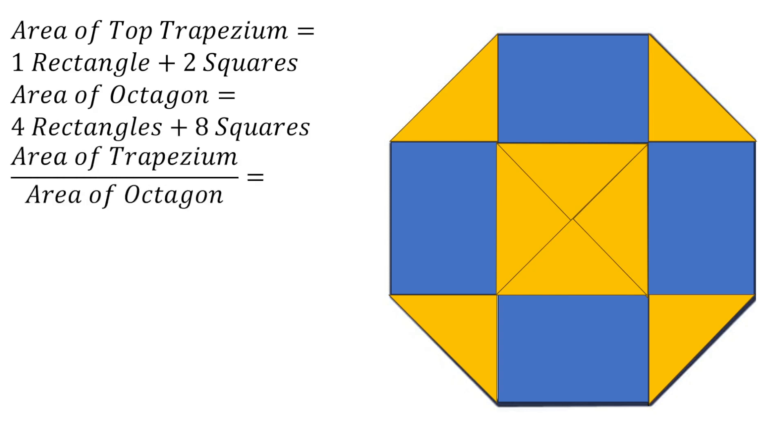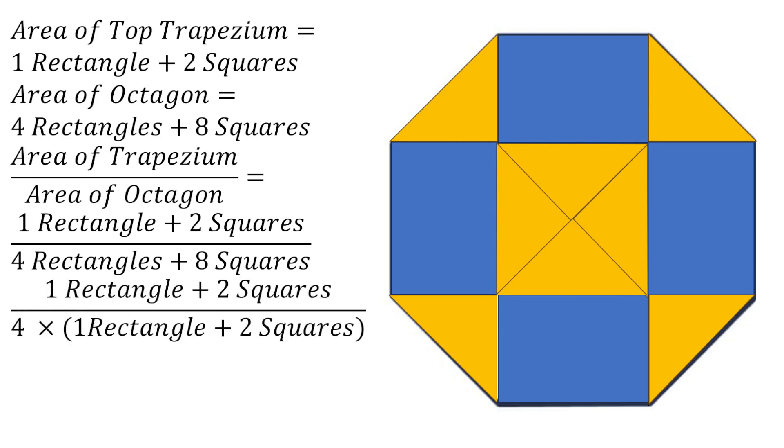So if we find what fraction of the entire octagon the trapezium at the top represents, it would be comparing one rectangle and two squares to four rectangles and eight squares. But when we look at that four rectangles and eight squares, we notice that it's just basically four times one rectangle and two squares.